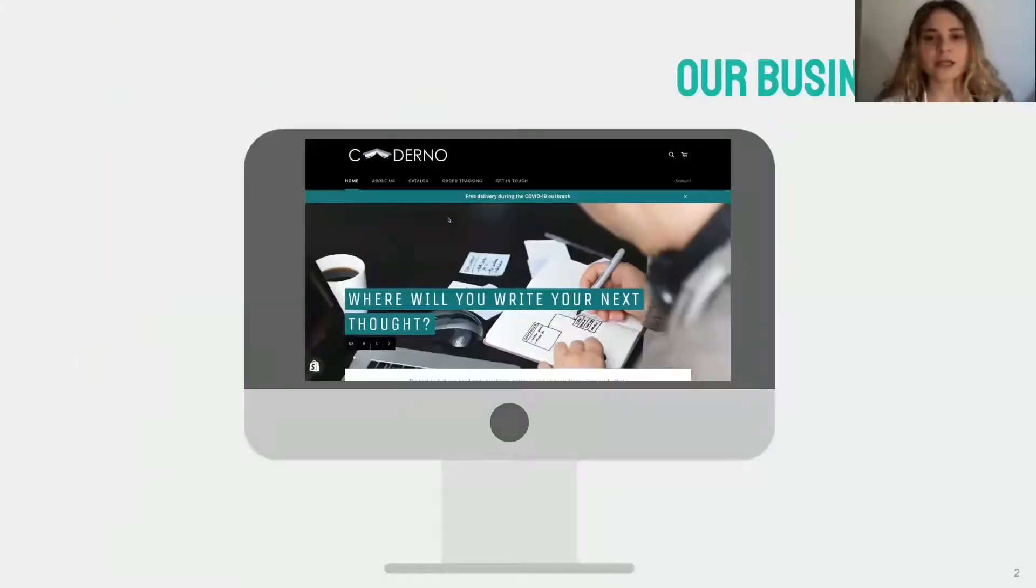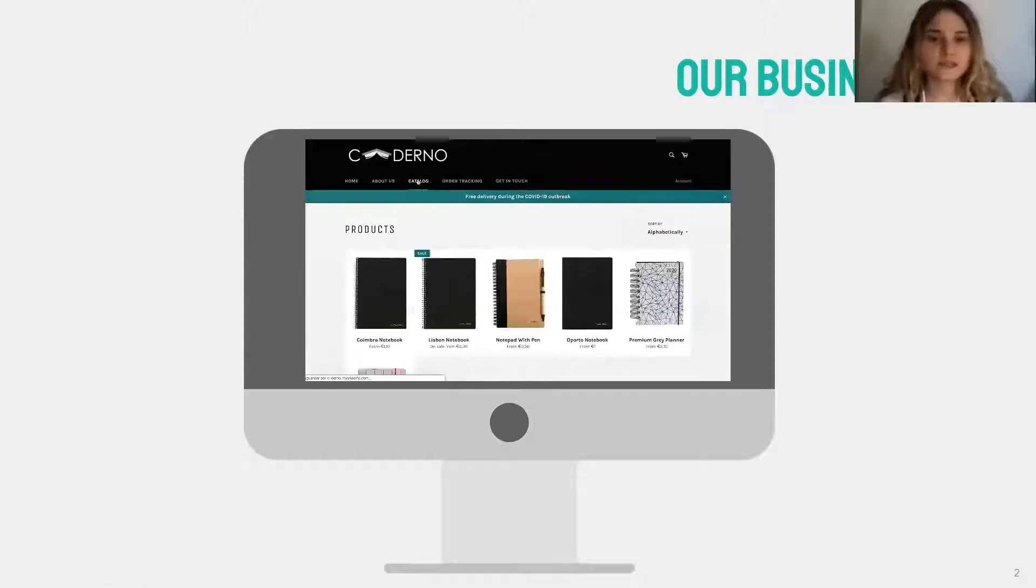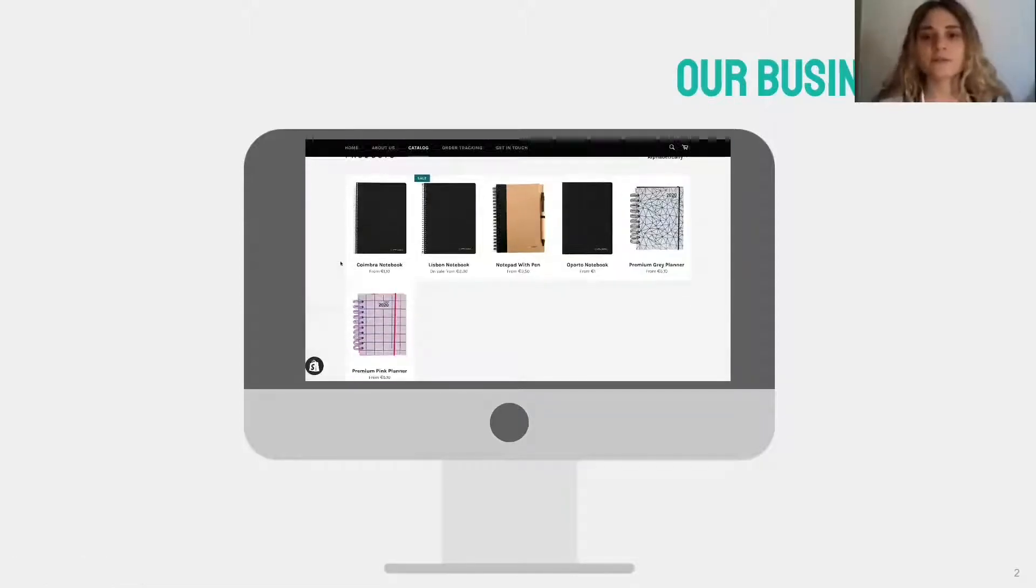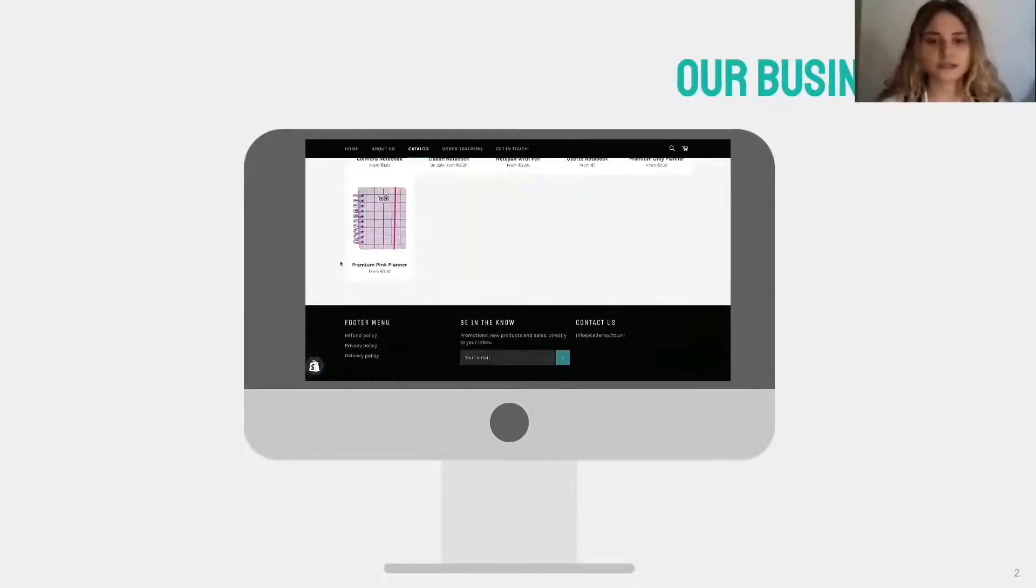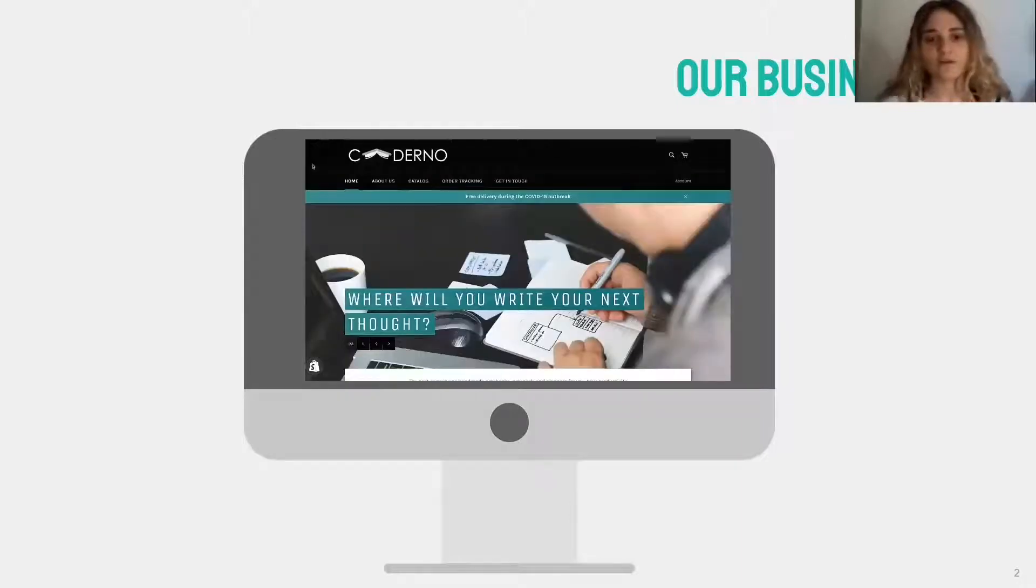is a standardized modeling language consisting of an integrated set of diagrams developed to help system and software developers specifying, visualizing, constructing and documenting the artifacts of software systems as well as for business modeling and other known software systems. Using UML helps project teams communicate, explore potential designs and validate the architectural design of the software.